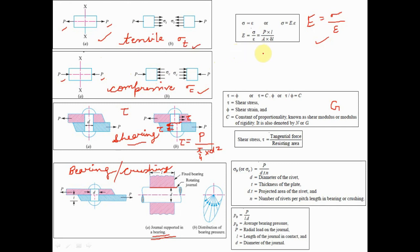By Hooke's Law, stress is directly proportional to strain. We have a modulus known as Young's modulus, or modulus of elasticity, denoted by capital E. It is the ratio of stress to strain.